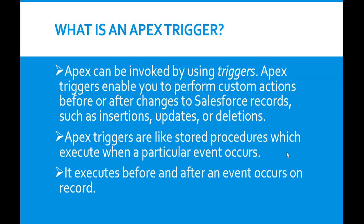Hello, this is Deepika from mytutorialrack.com. In this tutorial we are going to talk about Apex triggers. Apex can be invoked by using triggers. Apex triggers enable you to perform custom actions before or after changes to Salesforce records, like inserting a new record, updating an existing record, or deleting a particular record. Apex triggers are like stored procedures which execute whenever a particular event occurs.